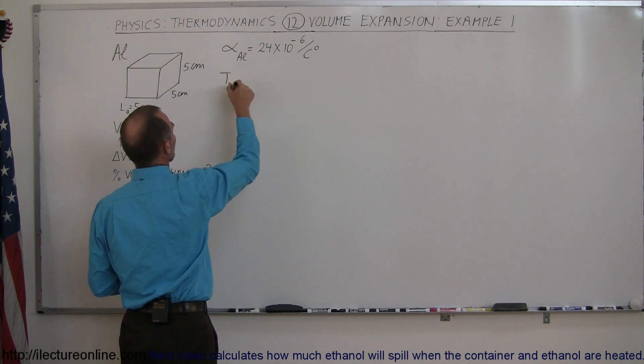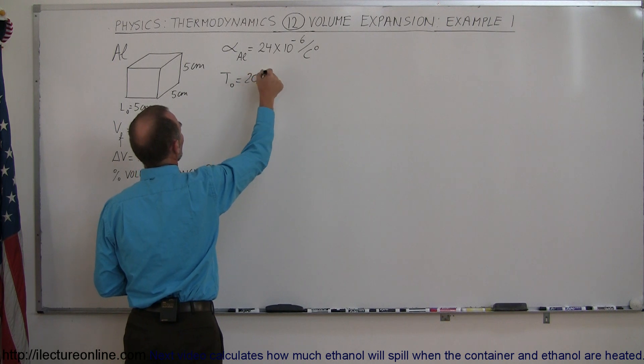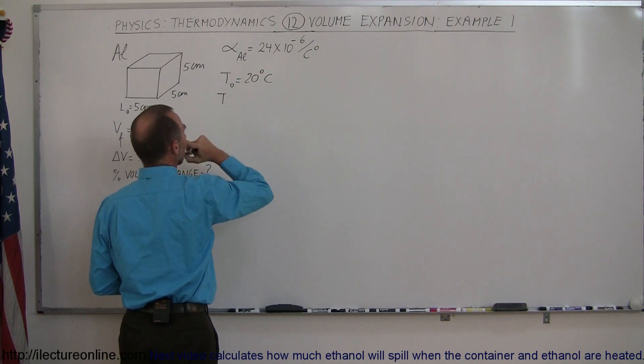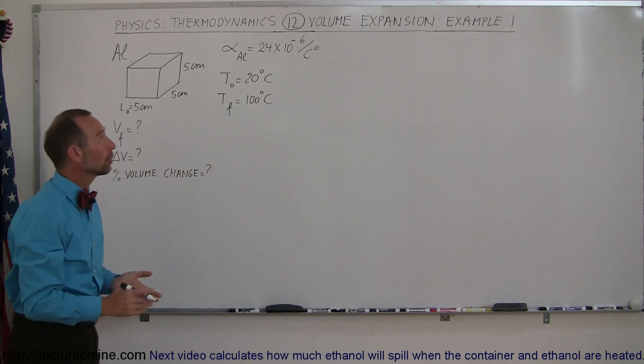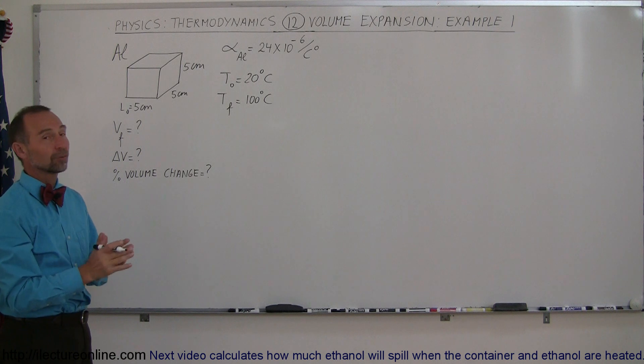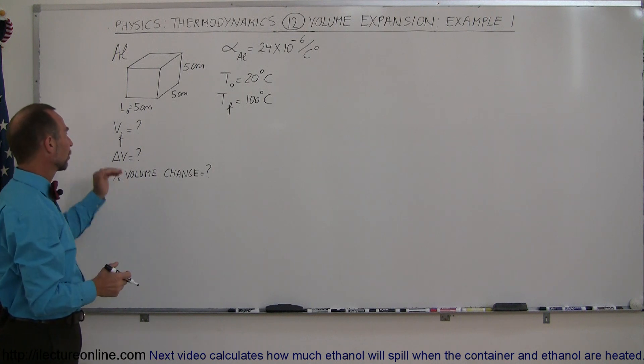Let's say that we have an initial temperature equal to 20 degrees centigrade. Let's say that we heat the cube up to 100 degrees centigrade. The linear coefficient of expansion for aluminum is 24 times 10 to the minus 6 per centigrade degree.